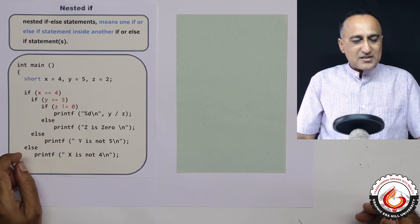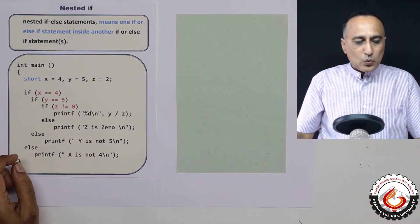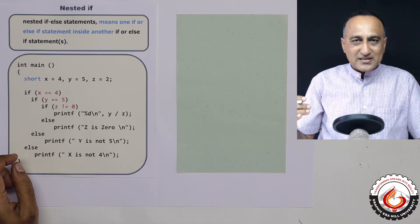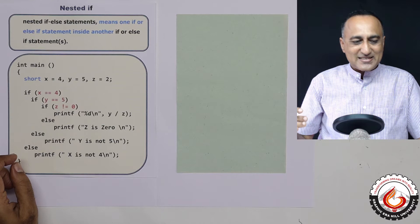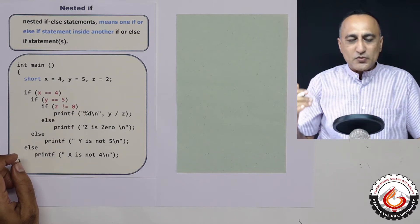What I am doing is I am going to divide y by z only if x is equal to 4, y is equal to 5, and z is not equal to 0.